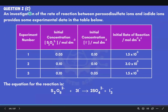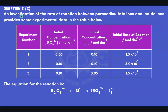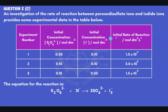Now we're moving on to Part 2C, which is an investigation of the rate of reaction between peroxodisulfate ions and iodide ions. It provided some experimental data shown in a table. There were three separate experiments, and in each experiment the initial concentration of the peroxodisulfate ions, the initial concentration of iodide ions, and the initial rate of reaction were all recorded in mol dm⁻³ and mol dm⁻³ s⁻¹.